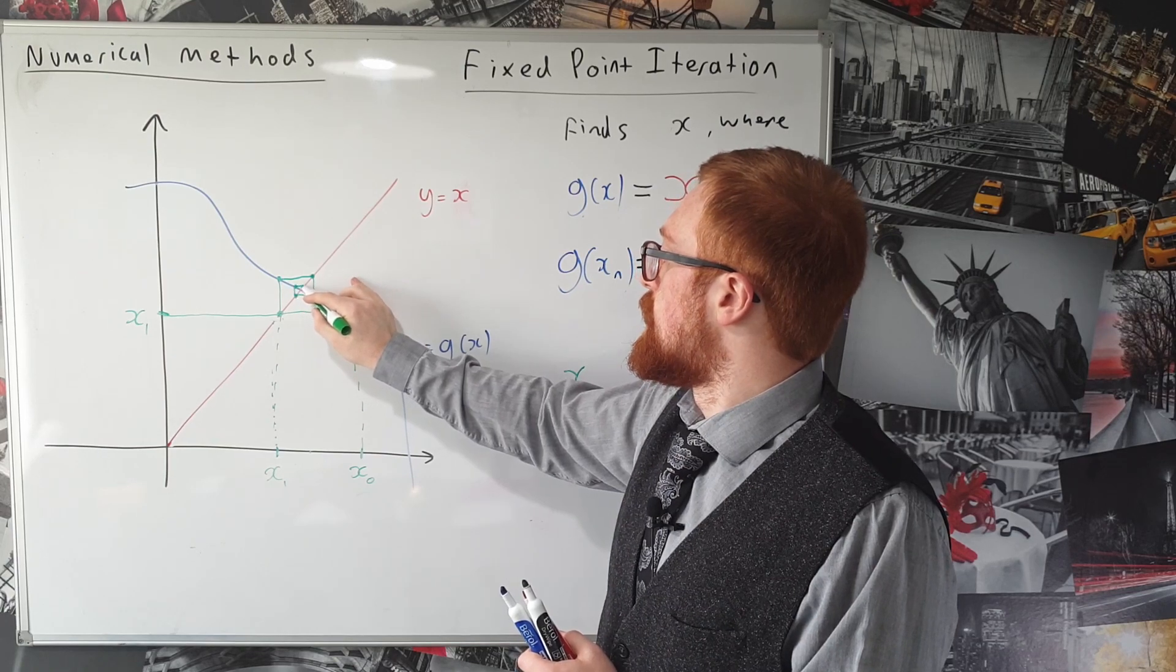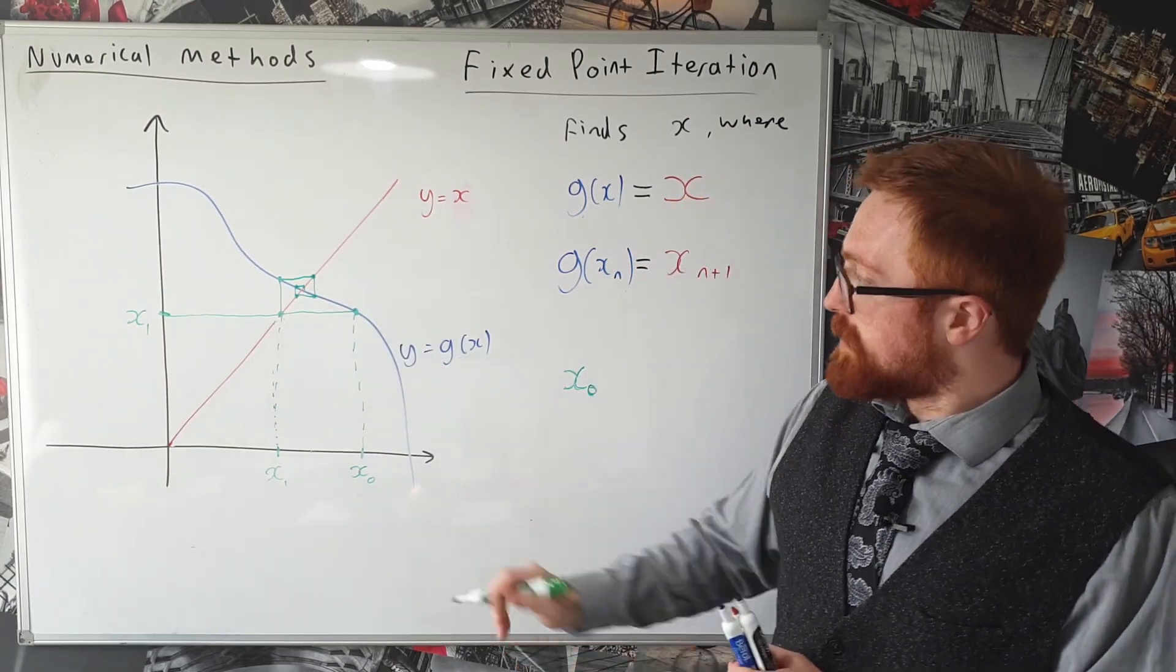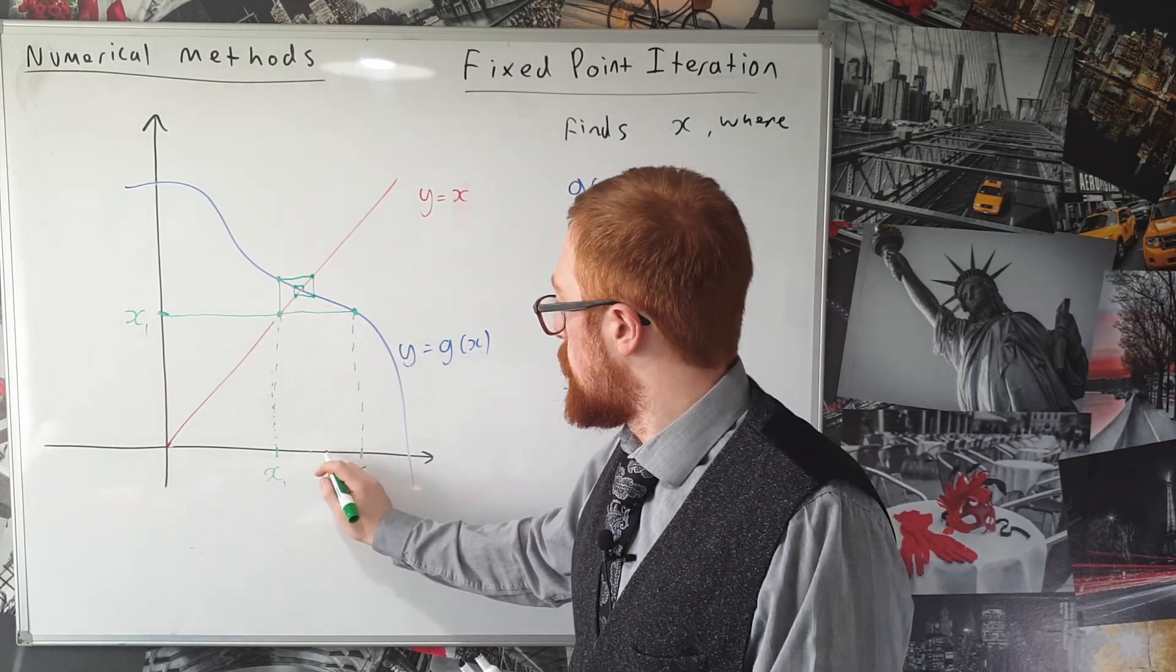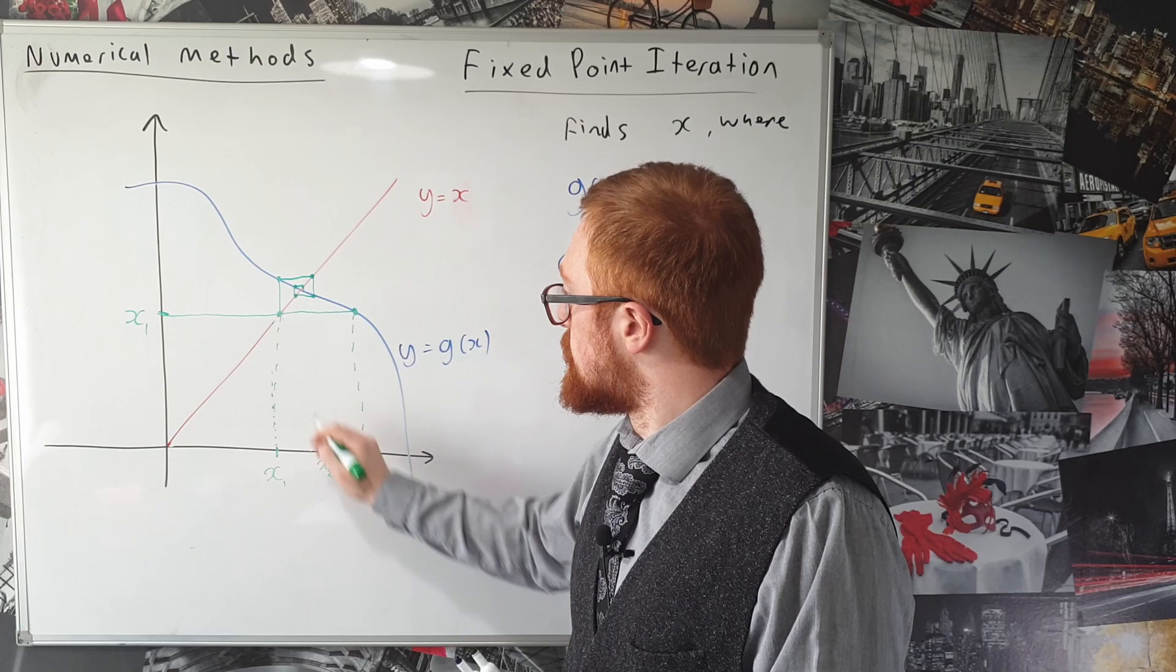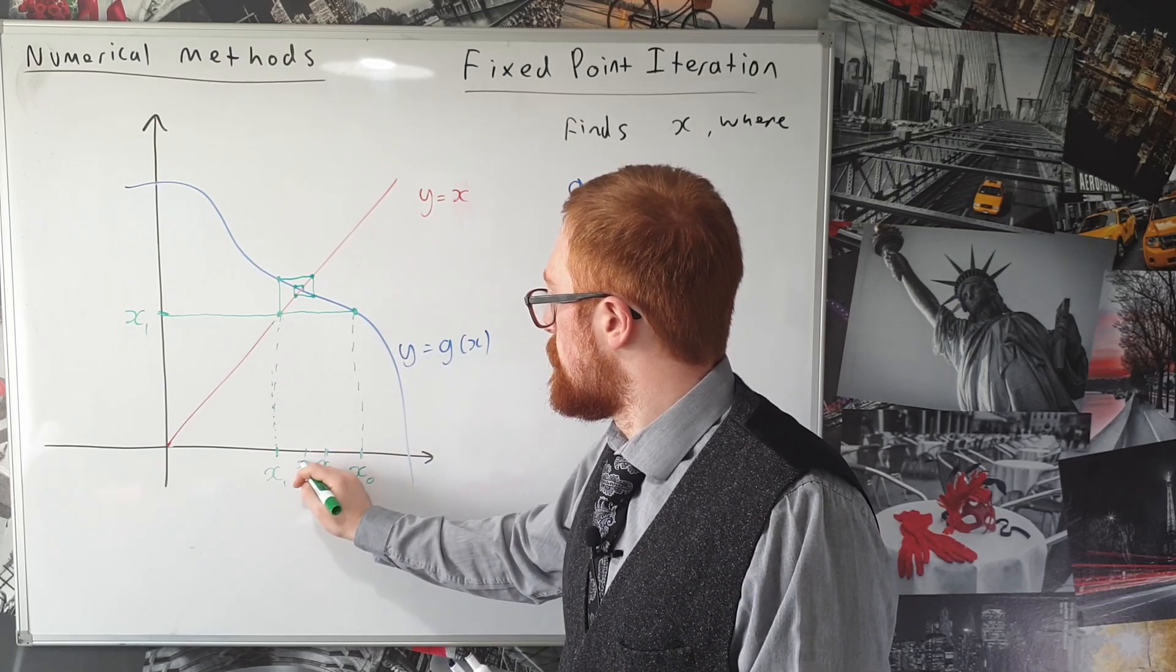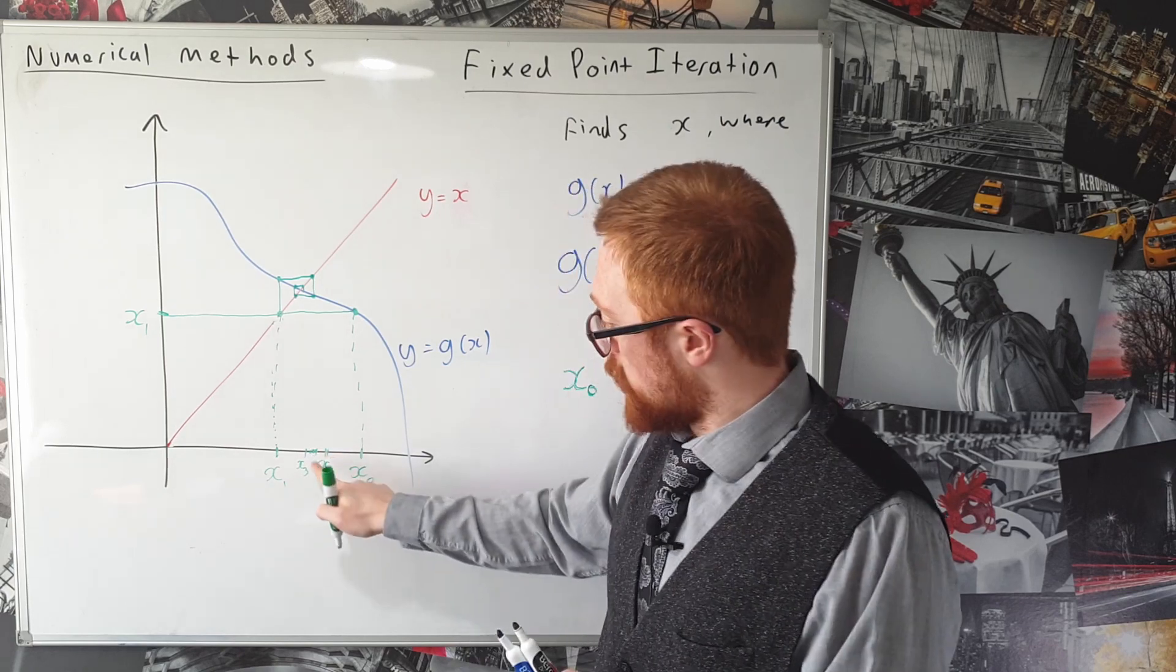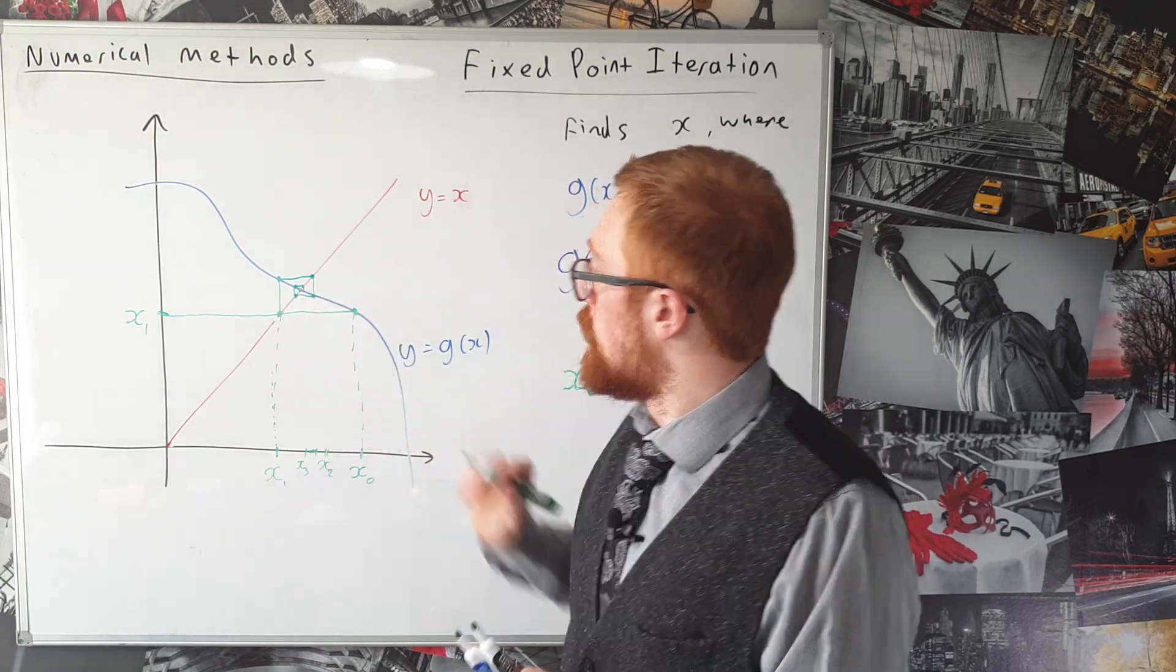And you can see the sequence of x's and so the first x_0 was here, x_1 was here, so x_2 is here and you can see the sequence of x's x_3, x_4, x_5 is going to home in on this point here.